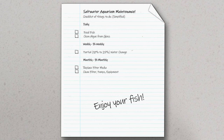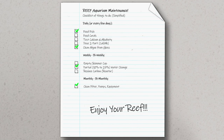With a simple saltwater tank, you'll need to feed your fish, clean the algae from the glass, do a partial water change once every couple of weeks, and replace the filter media and clean the equipment every month or two. With a reef tank, you have all of that, plus you're also going to be feeding your corals, testing a handful of parameters and dosing additives to maintain them. You'll often have a protein skimmer cup to empty out weekly and other filtration elements like reactors that will need tending to periodically.